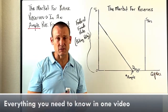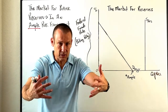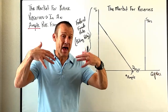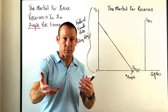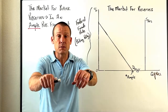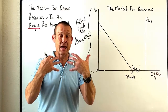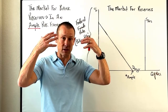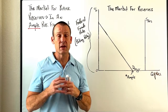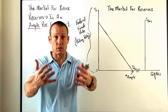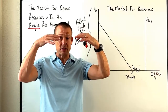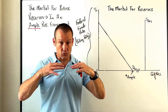The Fed put tons of reserves into the banking system. What they're doing is crediting commercial banks' reserve balances at the Fed. When we talk about bank reserves, you need to be thinking of commercial banks' reserve balances at the Fed. They credited those reserve balances by buying up a ton of assets from those banks — government bonds and mortgage-backed securities.